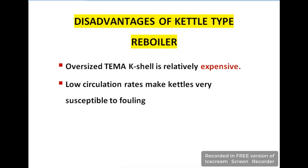Disadvantages of the kettle type re-boiler: First, the oversized TEMA K shell is relatively expensive. Second, due to a low circulation rate, fouling problems can occur.